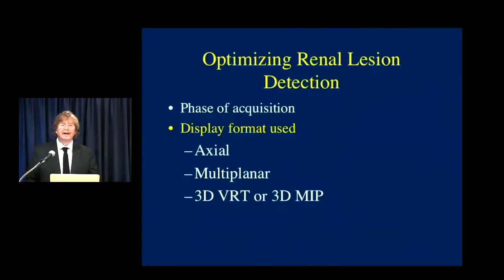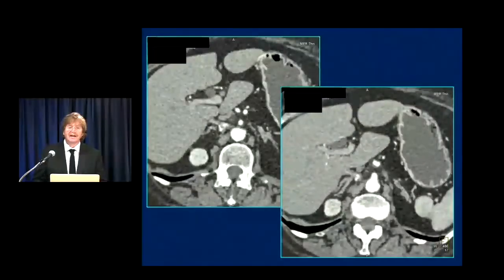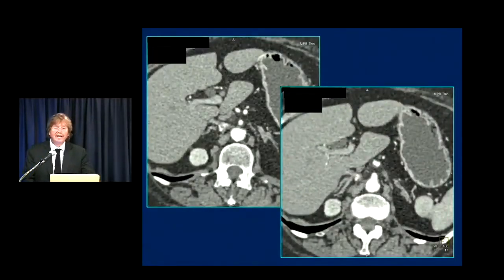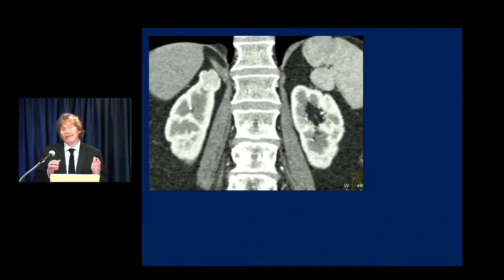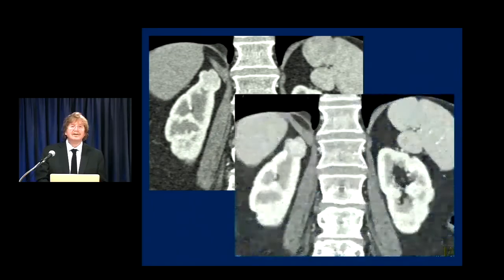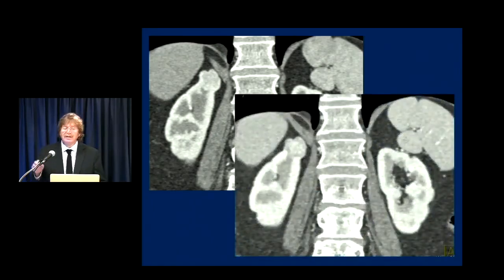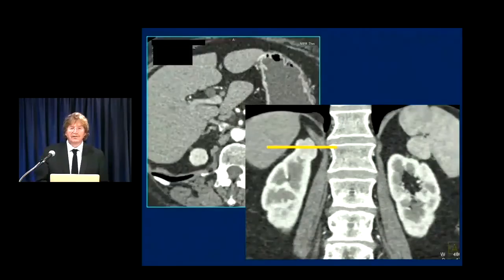If you only look at axials, it's easy to miss things. A classic example: a scan was read as negative. The upper pole of the right kidney looks unremarkable on axial imaging, seeming to blend with the rest of the kidney. But on a coronal view, it's obvious — a classic renal cell carcinoma visible from across the room. At a minimum, you need to look at coronals and sagittals, particularly coronals, or you're going to miss lesions.